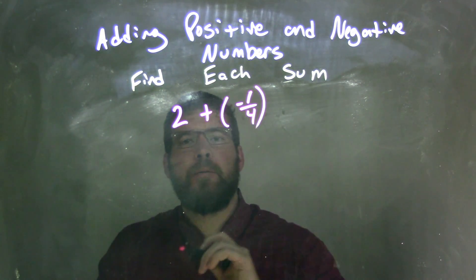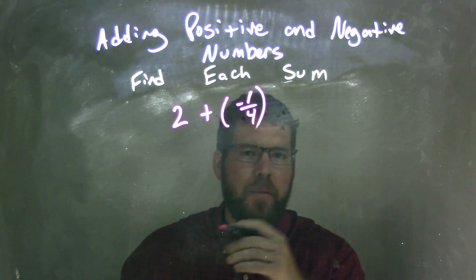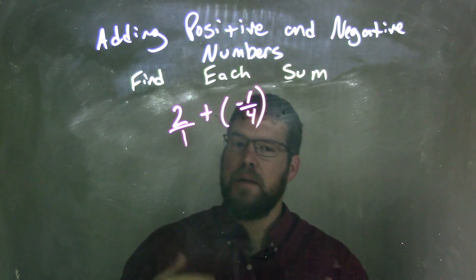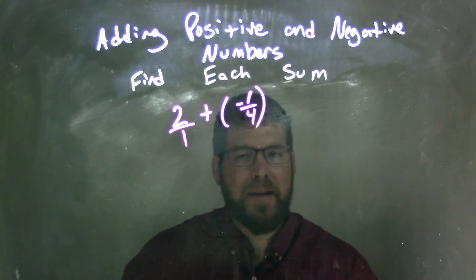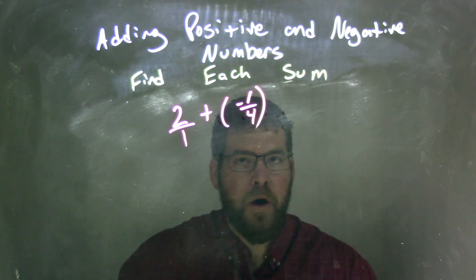Well, 2 doesn't have a base, does it? But it actually does. Every whole number has a base, and that base is 1, because 2 over 1 is the same thing as 2. So normally when we write it, we don't write the over 1, we just leave it as 2. But now I have a base of 2 over 1.